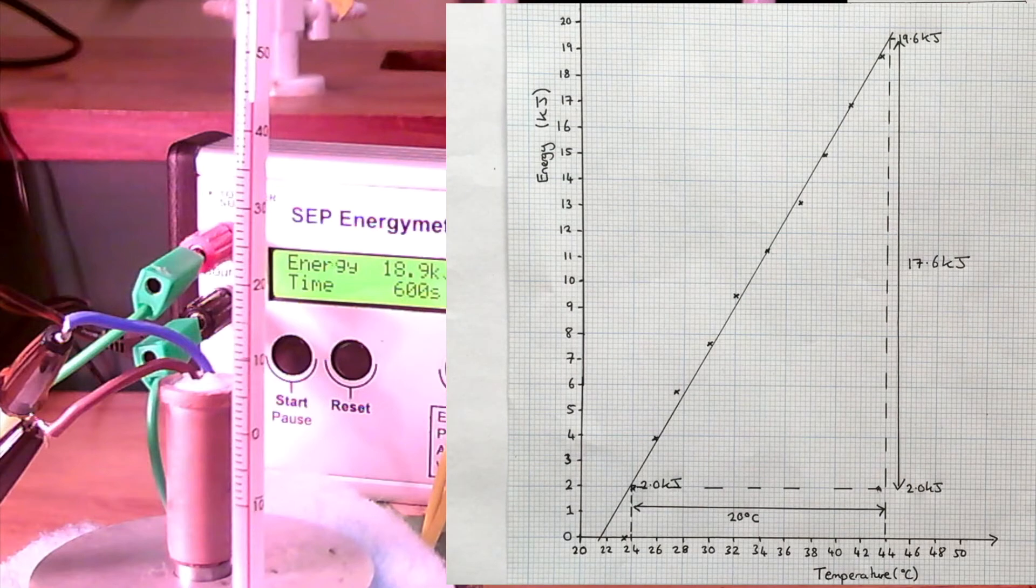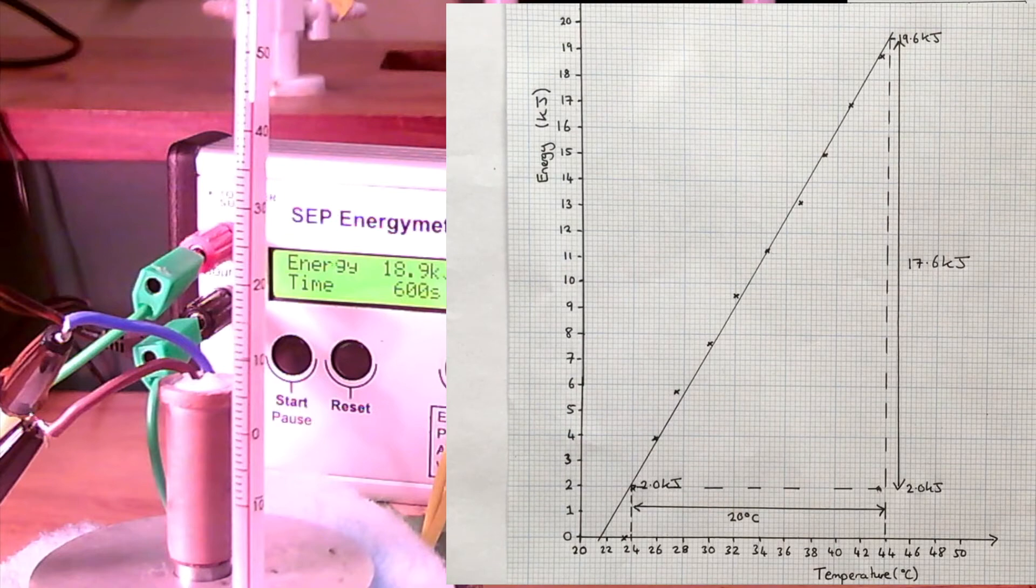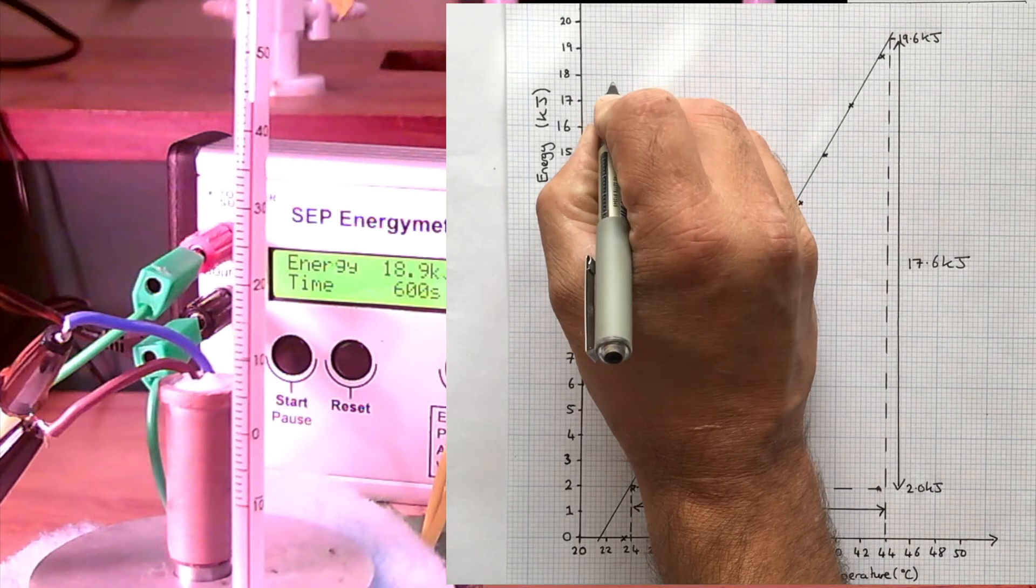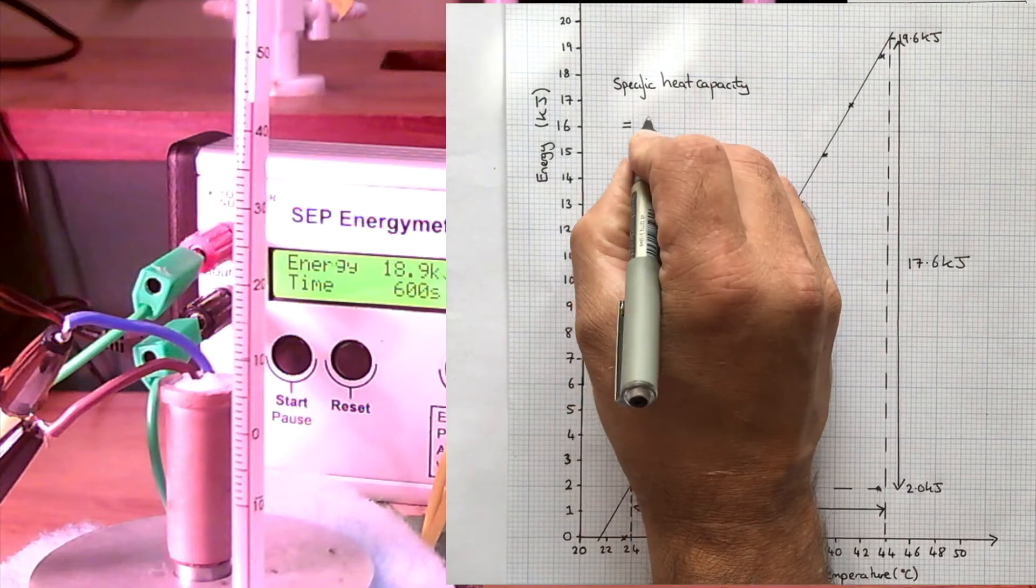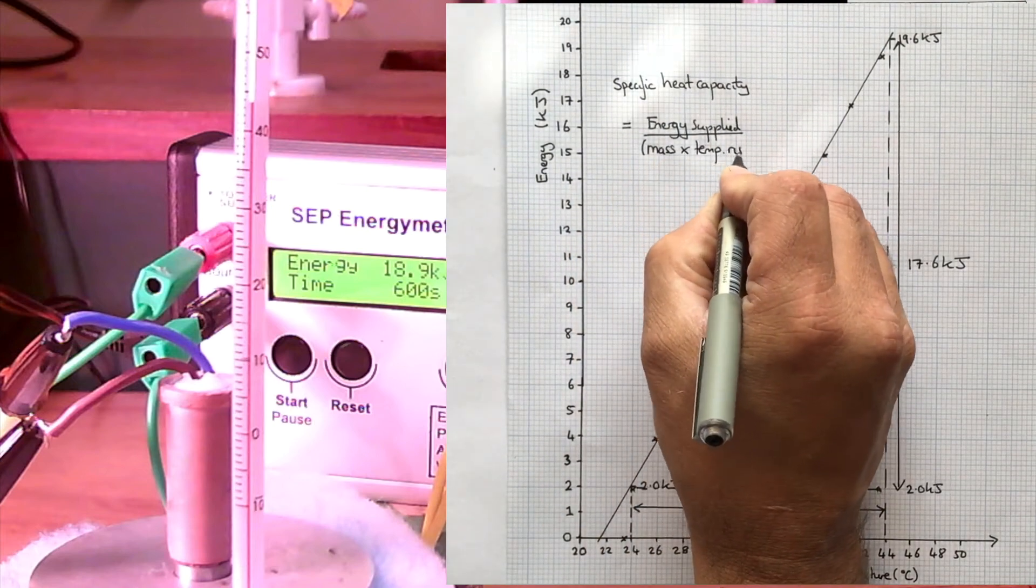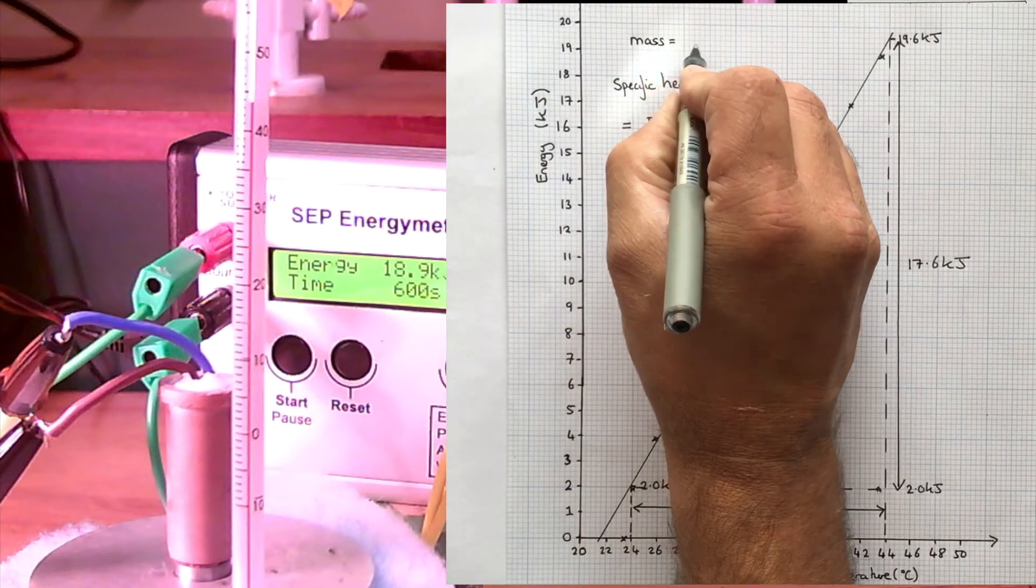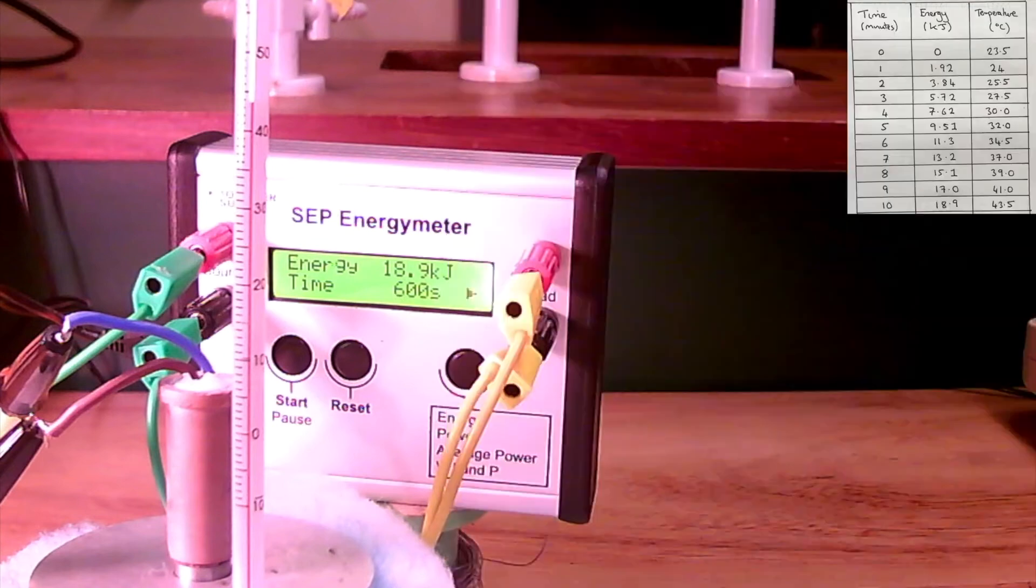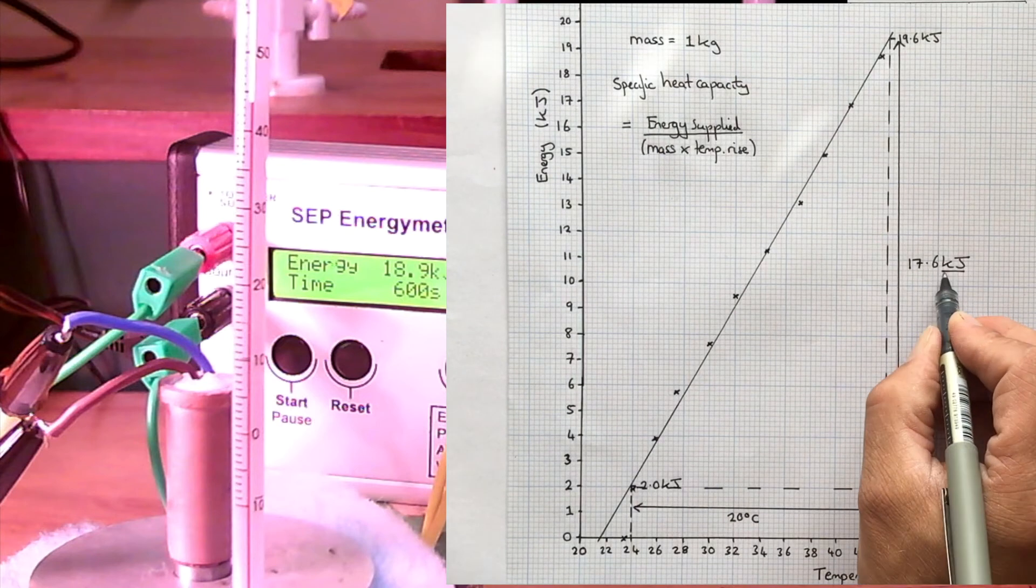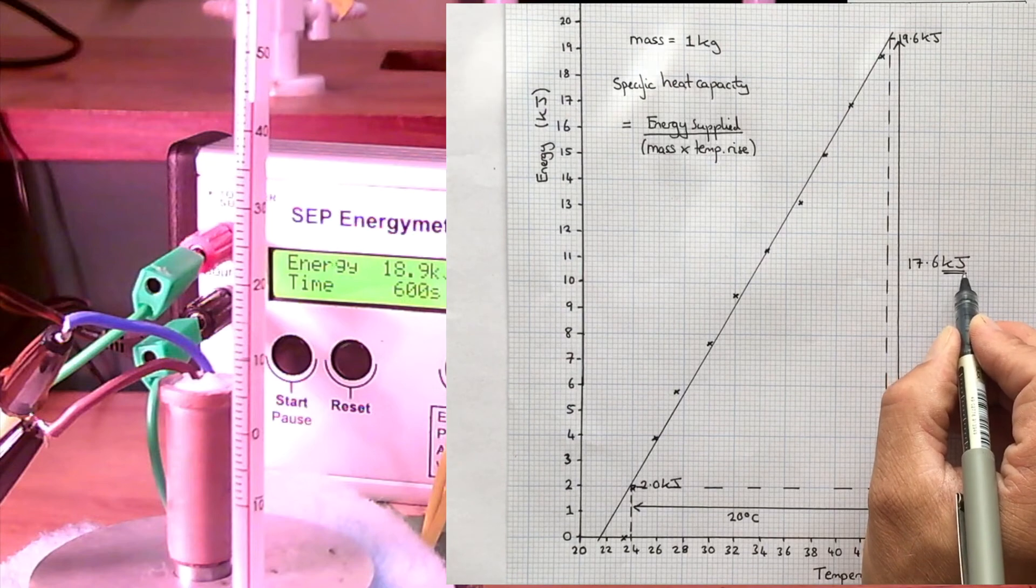So we now have to know how to use the gradient of the graph to measure the specific heat capacity of the aluminum block. The equation for specific heat capacity is energy supplied divided by the mass times the temperature rise. Weighing the aluminum block earlier, we found the mass was 1 kilogram. So we can now work out the specific heat capacity, remembering that the energy was in kilojoules. So we've got to convert that back into joules.